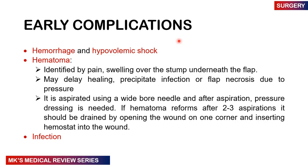Complications can be grouped as early, intermediate, and late. Early complications include hemorrhage and hypovolemic shock. Hematomas may form — identified by pain and swelling over the stump underneath the flap — and can cause delayed healing, precipitate infections, and lead to flap necrosis from pressure. Treatment involves aspiration with a wide-bore needle and pressure dressing; if the hematoma reforms after two to three aspirations, the wound should be opened and drained with a hemostat. Infections can also be an early complication.